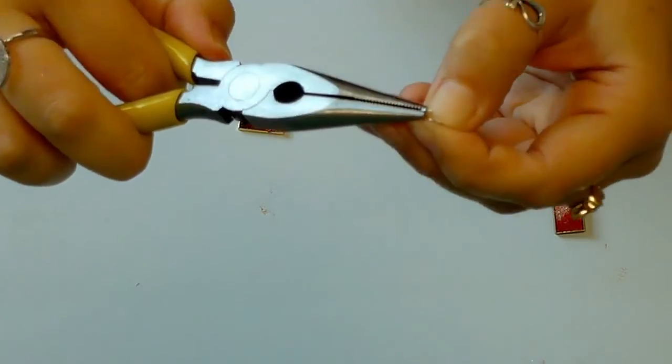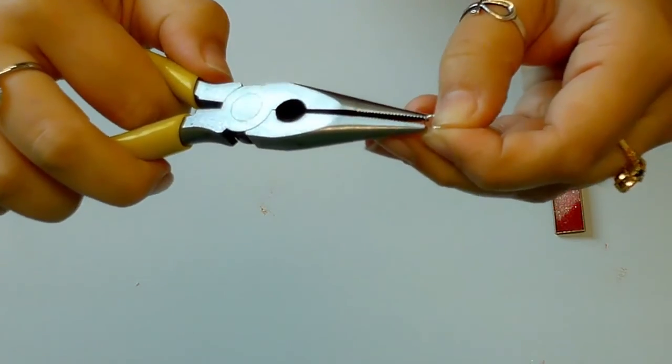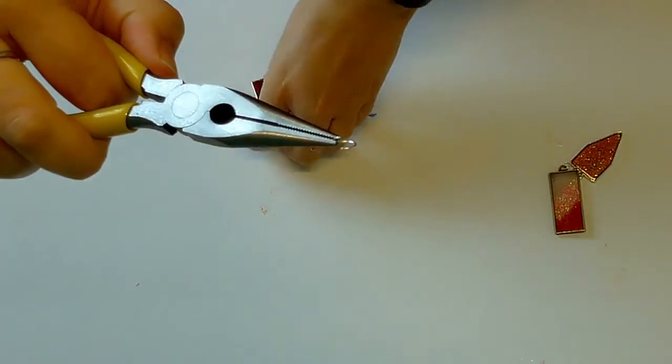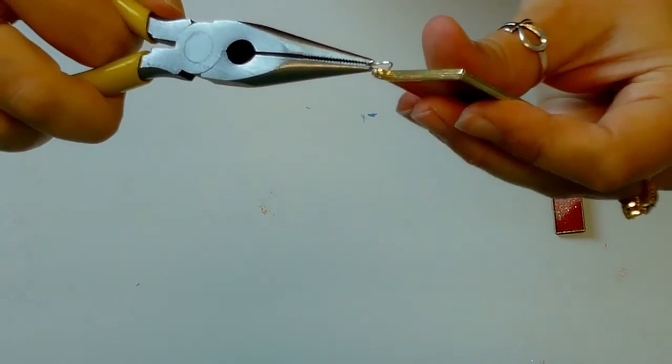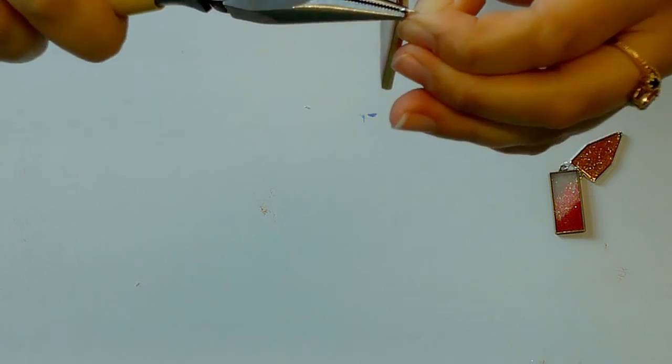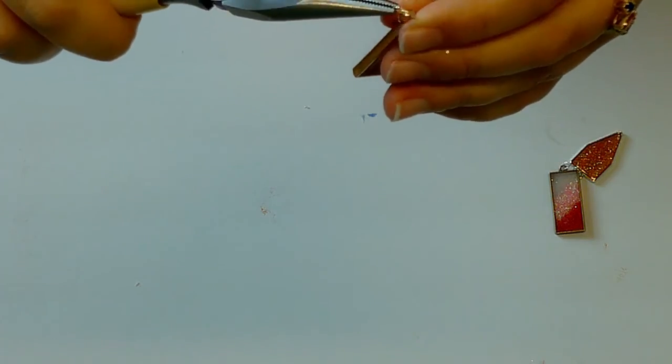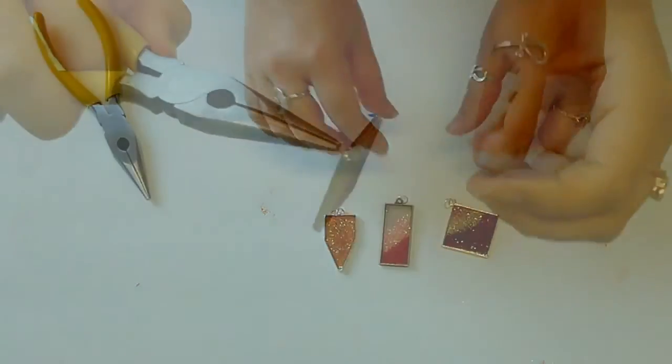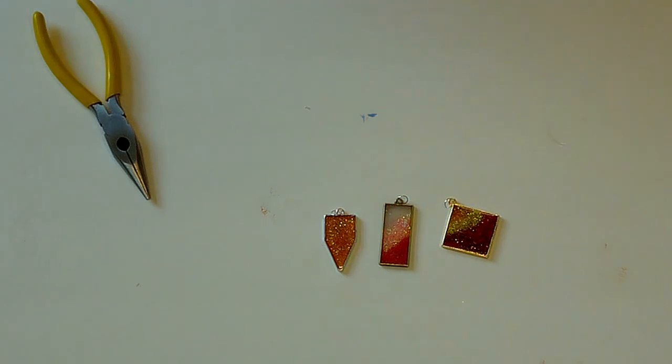Use pliers to connect a jump ring to each pendant. And we're done! Thanks for watching!